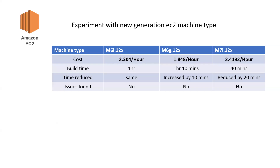We used to document these findings in a table, and if it was approved by management and senior engineers, we would implement those changes. Faster builds help developers test their changes faster, and a 20-minute reduction in build time also reduces cost. If you have 100 builds per day, you're saving 20 minutes multiplied by 100 builds — which is a huge difference over the long term. So on a regular basis, this was one of our ongoing FinOps activities.